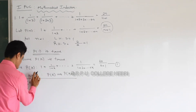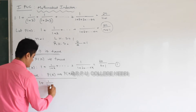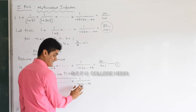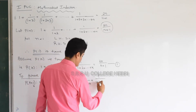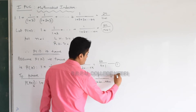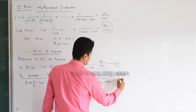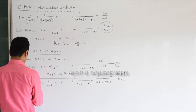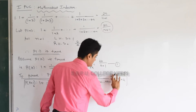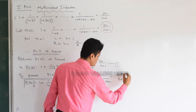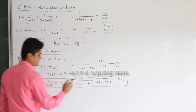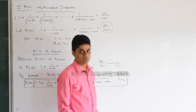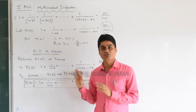To prove P of k plus 1, first better to write it down. P of k plus 1 is: 1 plus 1 by (1 plus 2) so on up to 1 by (1 plus 2 plus ... plus k), that is the kth term, and k plus 1 is one term extra: 1 by (1 plus 2 up to k plus 1) equal to 2(k plus 1) divided by (k plus 2). This is the expression you should get — remember this. Don't try to use it anywhere directly in mathematical induction.